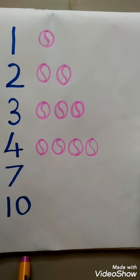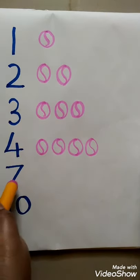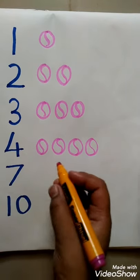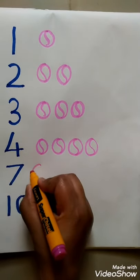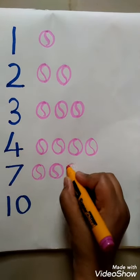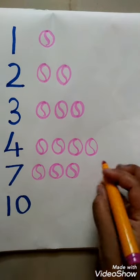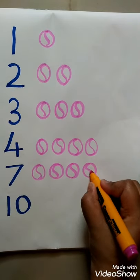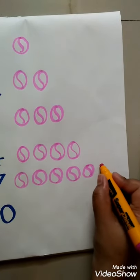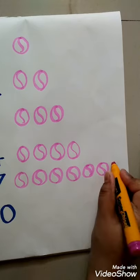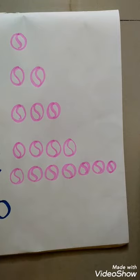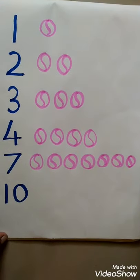After number 4, which number is there? 7. So number 7 — how many balls? Count: 1, 2, 3, 4, 5, 6 and 7. Stop. So number 7, 7 balls.